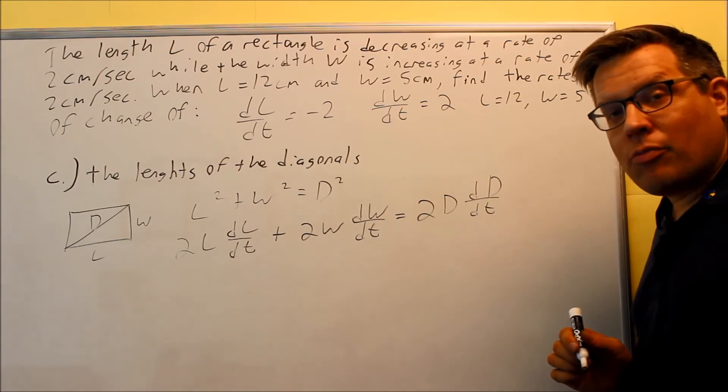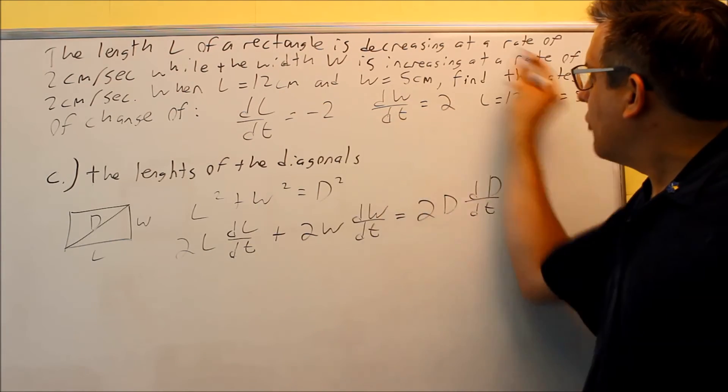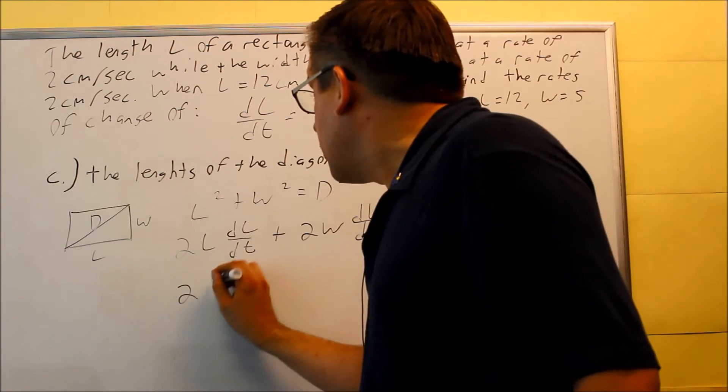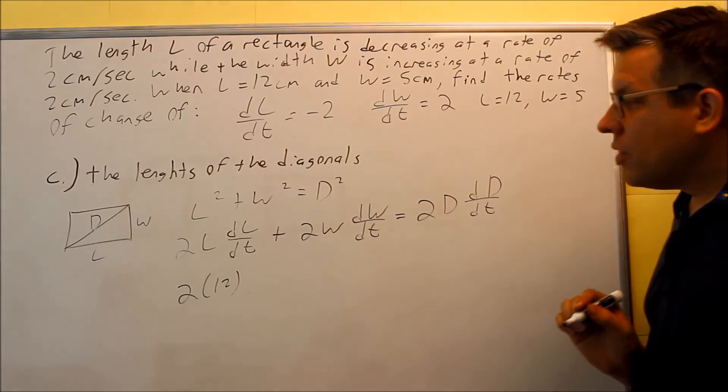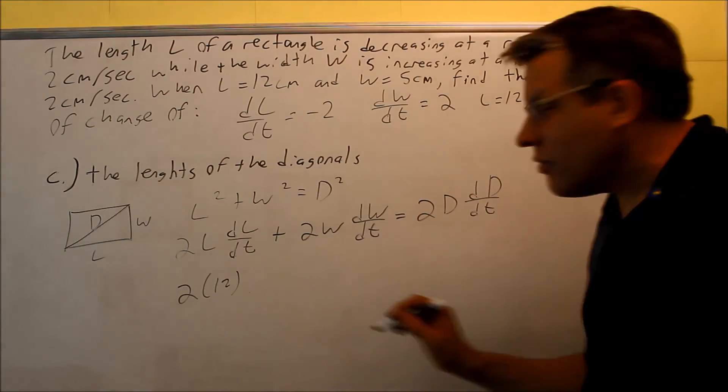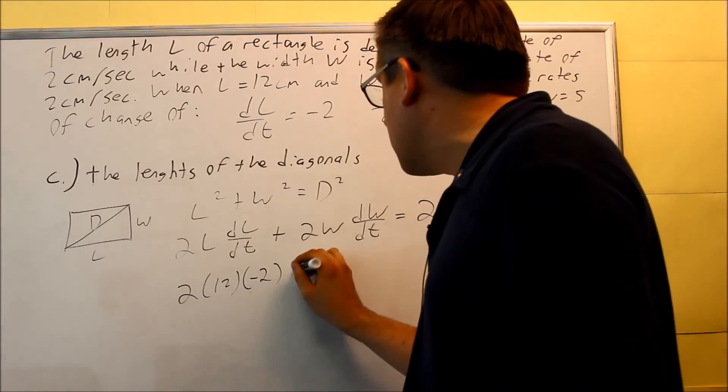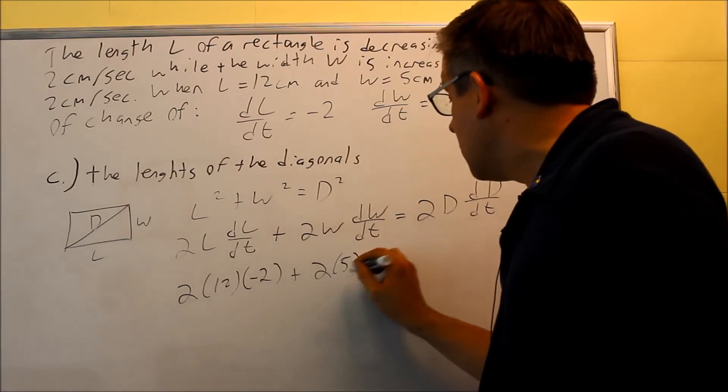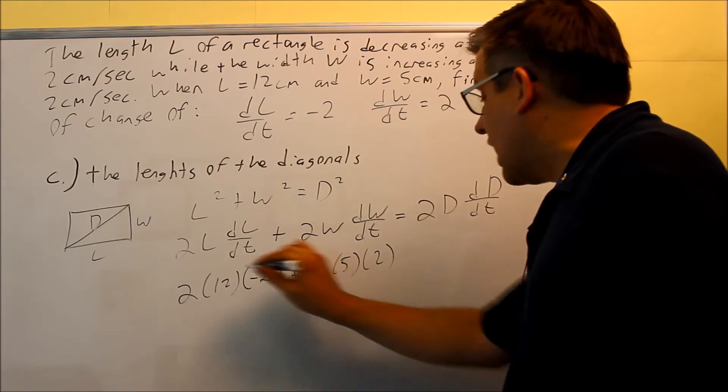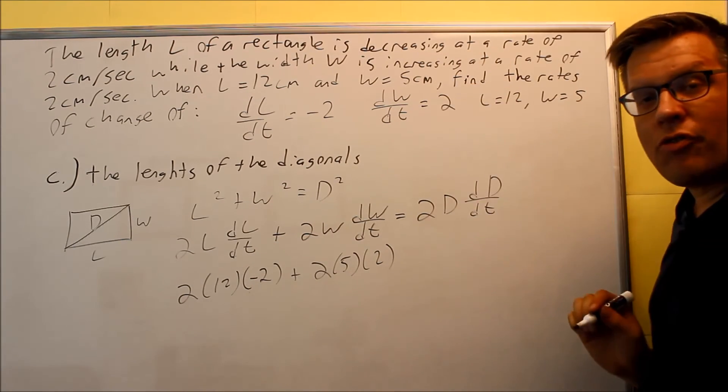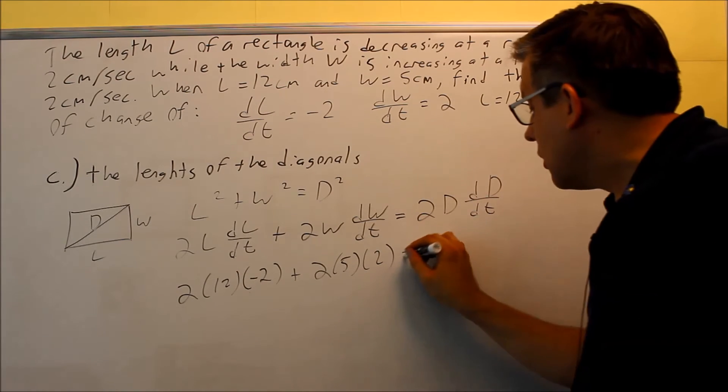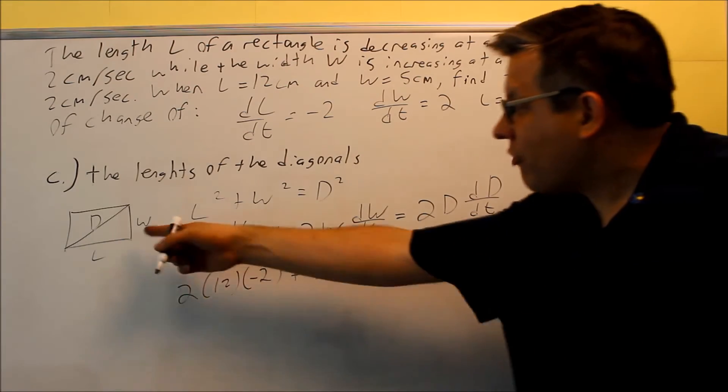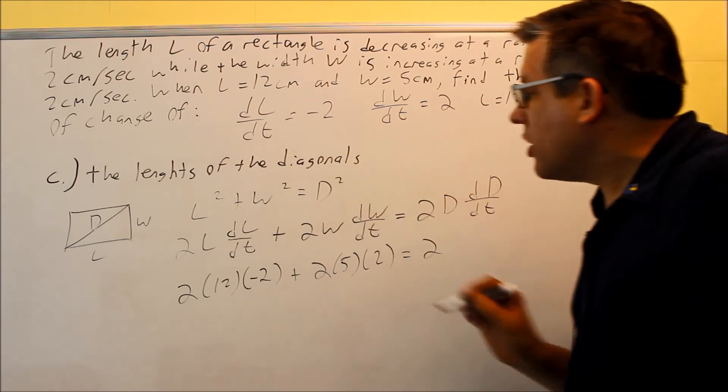Now it's just a matter of plugging in information that's been provided. So I have this information, I can plug all that in here. So let's do 2L, so I have 2 times the L, length is going to be 12. dL/dt was given as negative 2, decreasing. And then I have the W, 5, that's given. dW/dt is 2. So I have all that information, same that we did before in the previous parts. Now what about this? Now D, I don't have, however, I can find it based on my picture, or I can even use this right here.